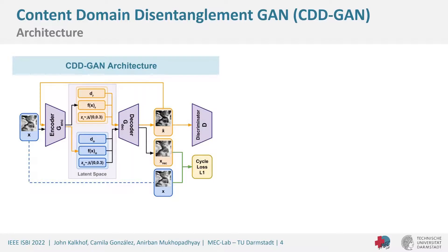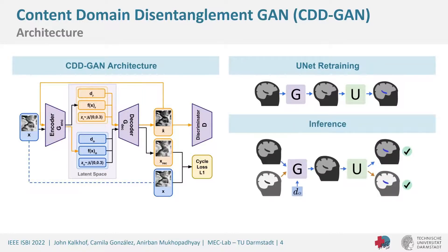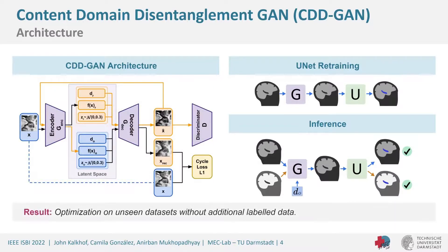Afterwards, we do a U-Net retraining step, which is very important because the generator never produces exactly the same output as the input. This way the U-Net can specifically learn to work well with the generator output. We still only use training data — we transform the training data and train on that — so we can do inference on any trained domain by transforming into the training domain, allowing the U-Net to perform well on all of them without any additionally labeled data.